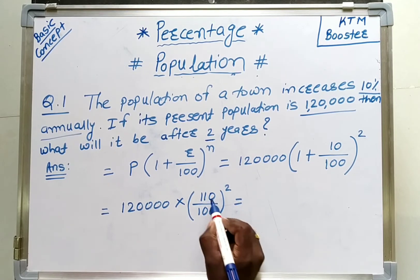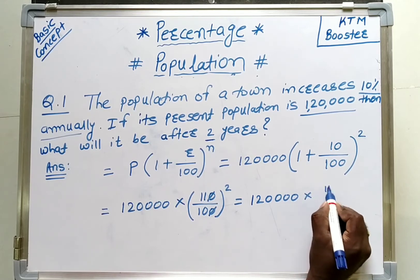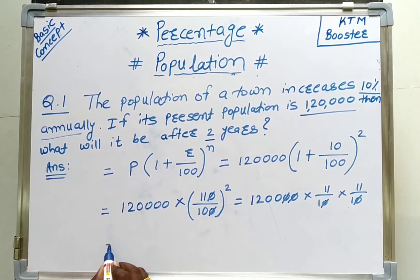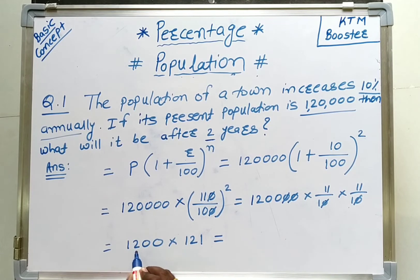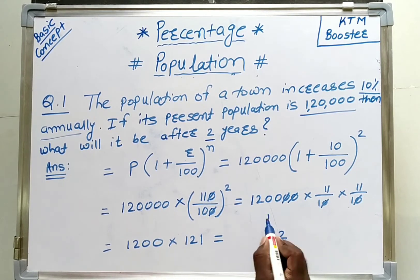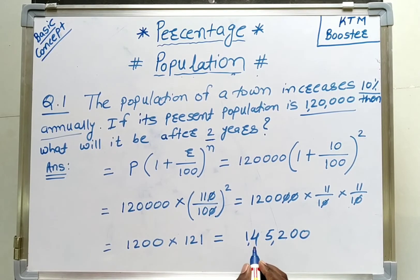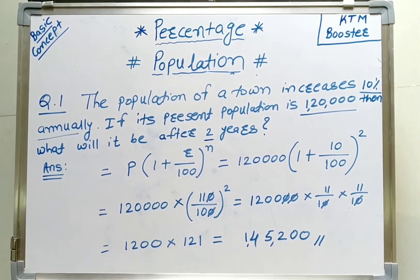The two zeros cancel, leaving 1,200 multiplied by 121. Calculating: 12 ones are 12, 12 twos are 24, carry 2; 12 ones are 12 plus 2 is 14, and zero remains. So after 2 years, the population of the town will be 1,45,200. In this way we can calculate the population after 2 years.